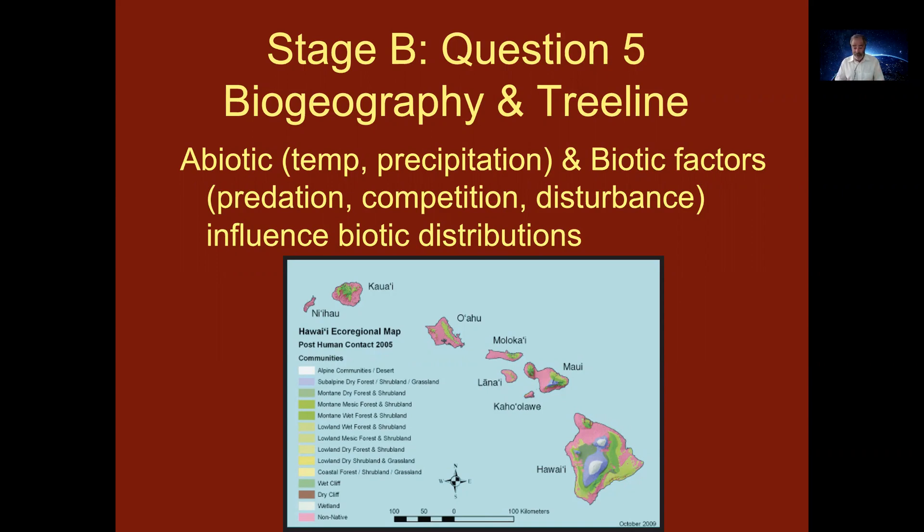In Hawaii, it's a very different reason for the tree line. There's a bunch of temperature, precipitation, and other factors that influence the biotic distribution. This question focuses on the tree line and its relationship to precipitation.